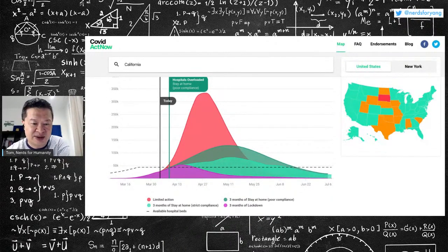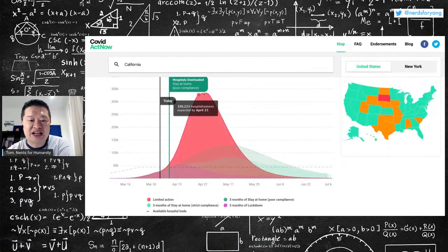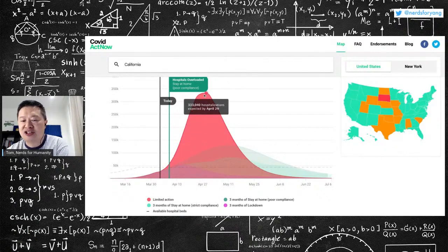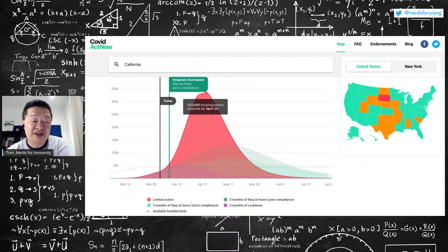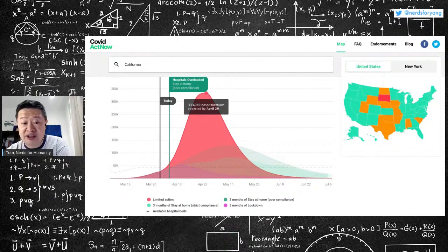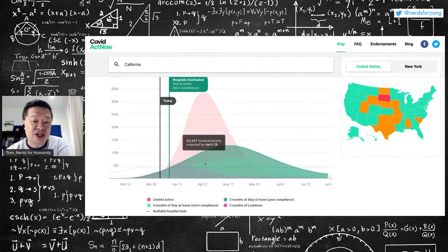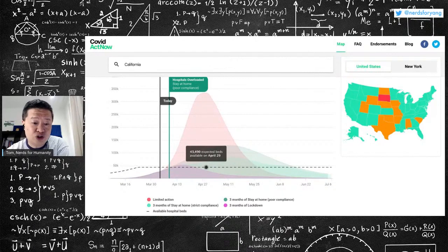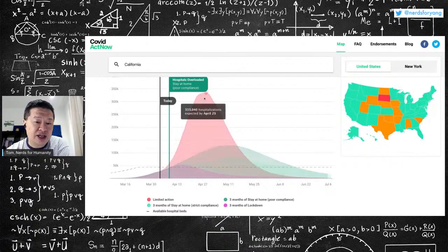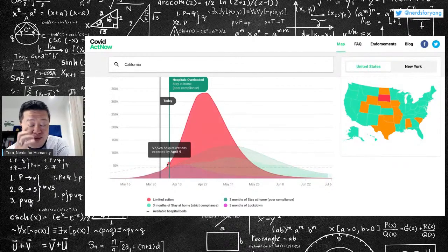Now, these colored lines represent how many hospital beds they may need, how many hospitalizations they may need, depending on how fast this thing spreads. So the worst case scenario is if they do limited action and they just say, hey, this is just like the flu, the cure shouldn't be worse than the disease. You could end up by April 29th, if Cuomo didn't do anything and just said everybody do whatever you want, you could have 333,000 hospitalizations for 43,000 hospital beds. So you would basically overload the hospital capacity probably around April 8th.